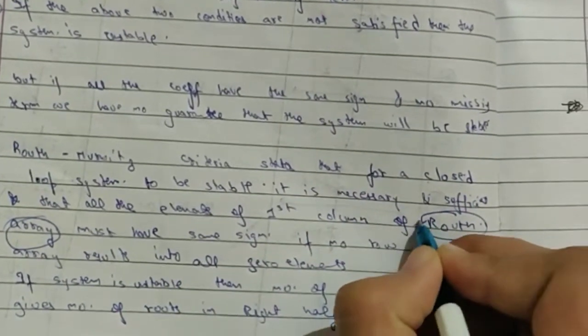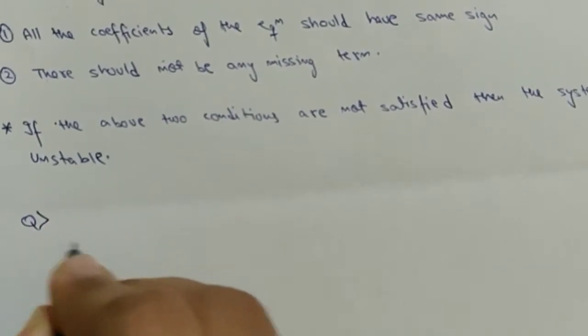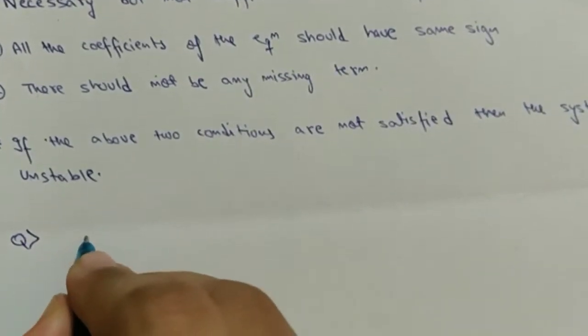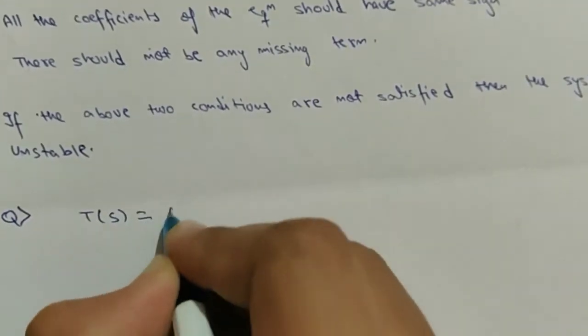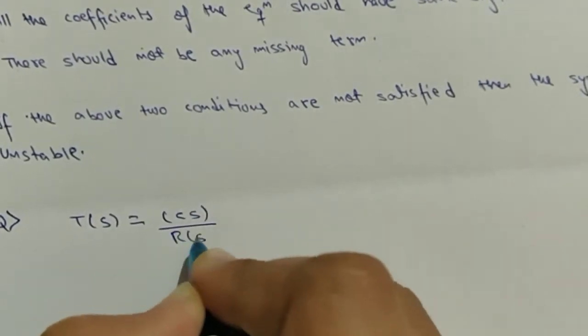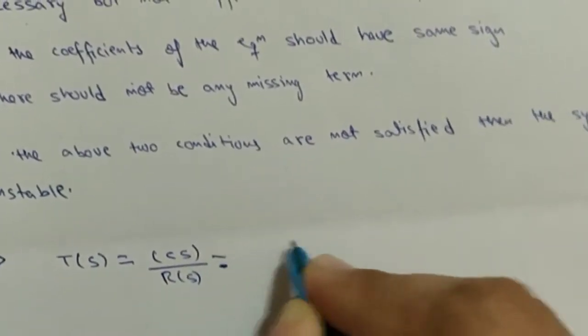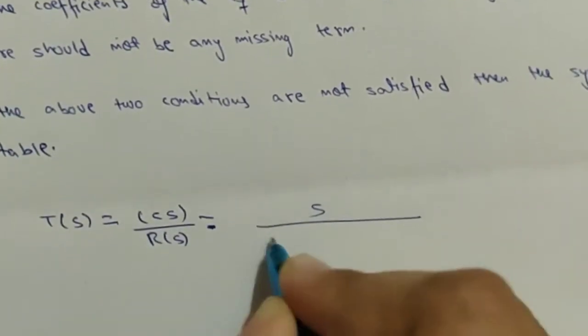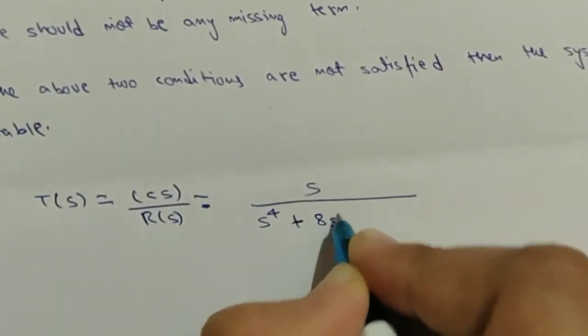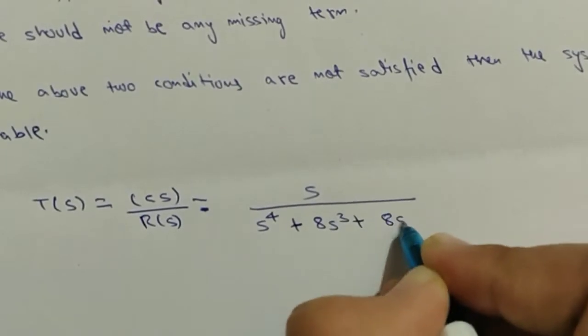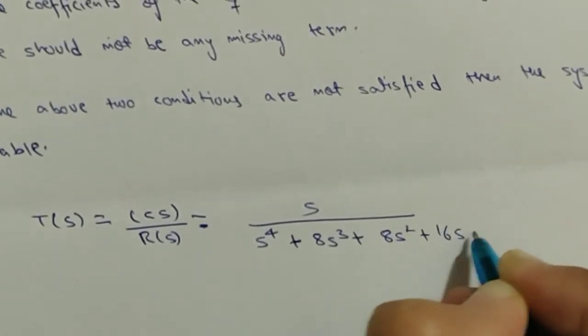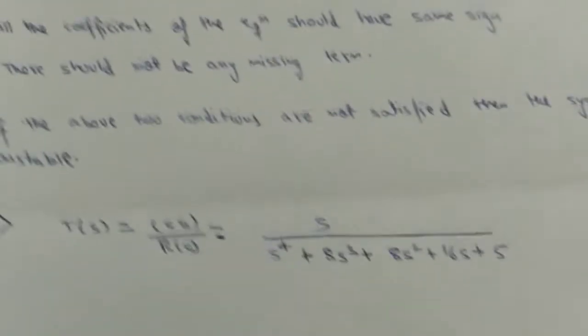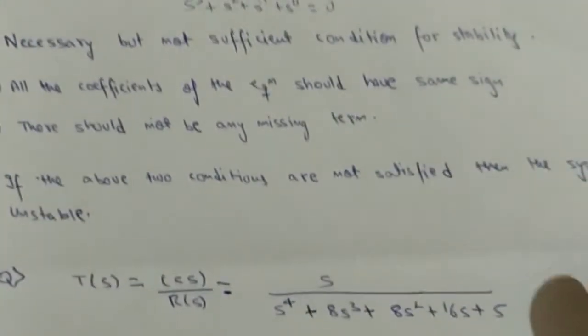Now I will teach you the Routh array using a question. Suppose we have a transfer function T(s) = C(s)/R(s) = s / (s^4 + 8s^3 + 8s^2 + 16s + 5). We have to check the stability of this system using Routh-Hurwitz criterion.